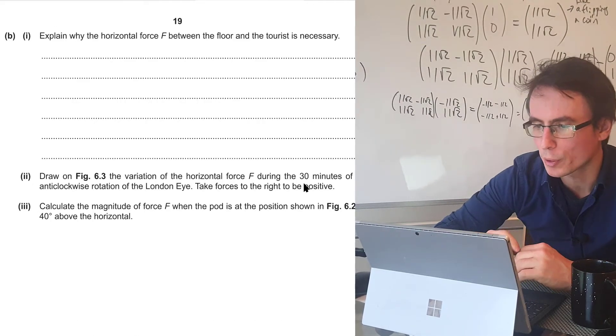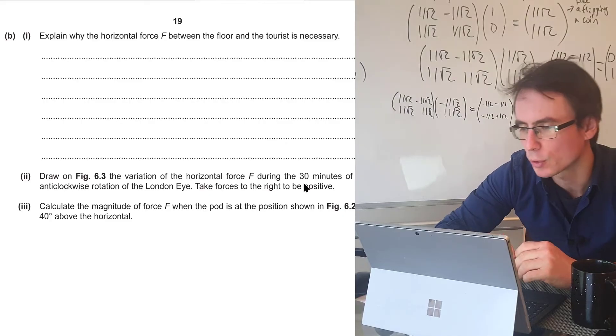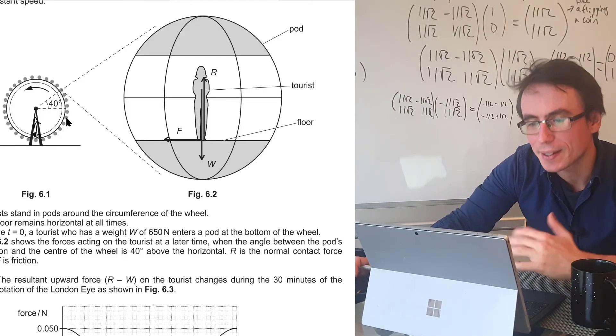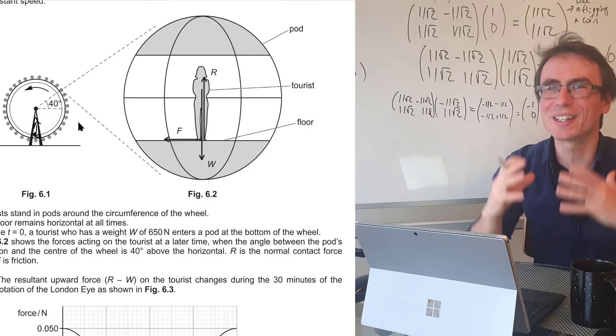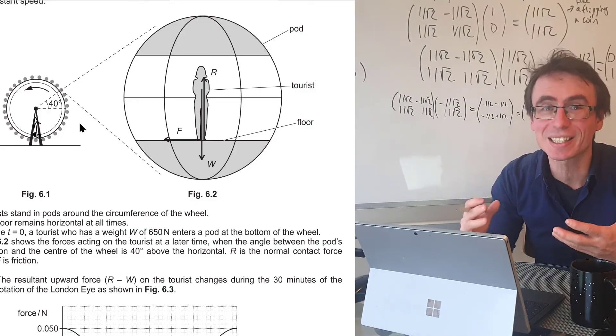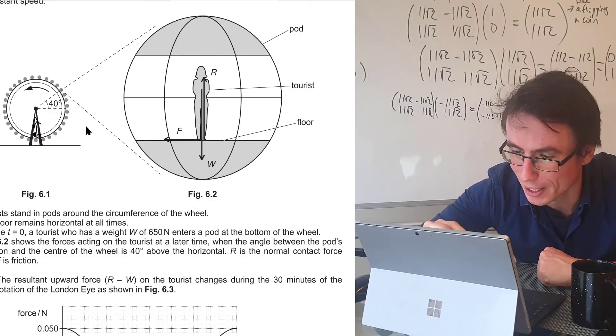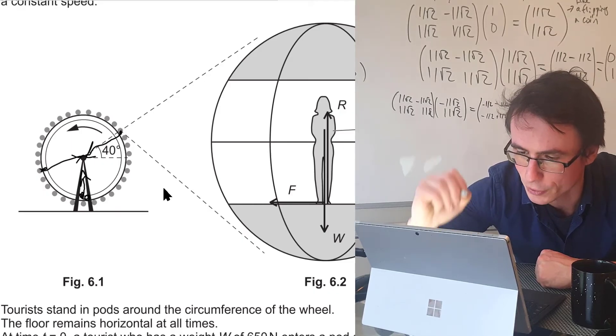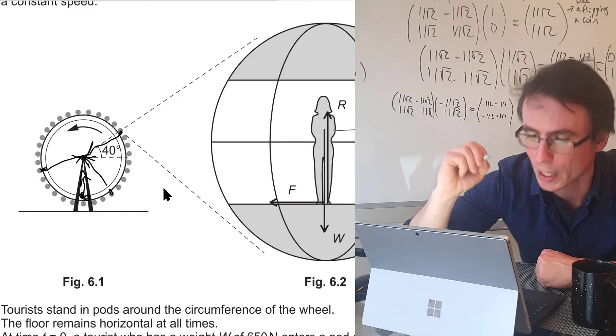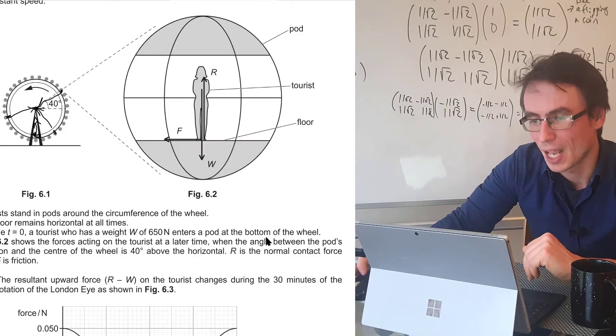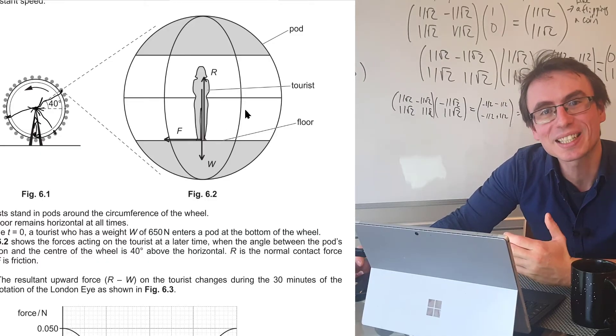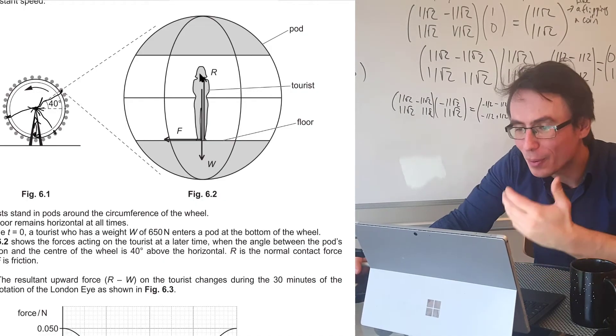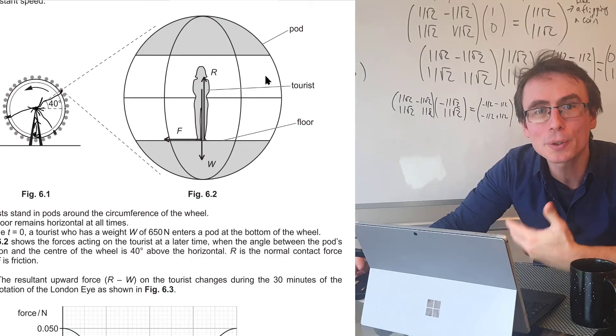Next part, explain why the horizontal force F between the floor and the tourist is necessary. Well, if we go back to this figure, if the pod is executing centripetal motion, there always needs to be a force that is acting towards the center of rotation. So if the pod is here, there's going to be a force acting towards the center. In order for the resultant of these three forces to be acting along the center, there needs to be a horizontal vector as well, because otherwise the resultant force will be acting purely up or down.